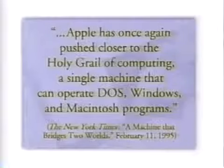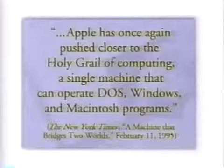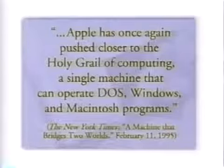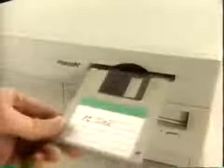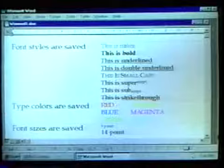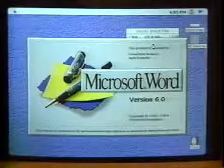Apple has once again pushed closer to the holy grail of computing — a single machine that can operate DOS, Windows, and Macintosh programs. Macintosh is still much easier to use than a PC running Windows 95, and it offers advanced multimedia you can't get with Windows 95. But there are a lot of PCs out there, and you need a computer that's compatible with them all. The good news is, with a Macintosh, that's precisely what you have. Because every Power Macintosh sold today comes with the ability to read from and write to PC discs, so you can take a document created in Microsoft Word on a Windows 95 PC and open it on your Macintosh.